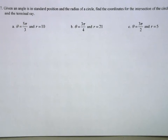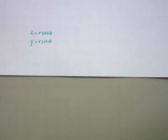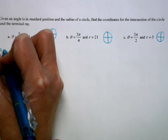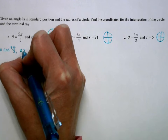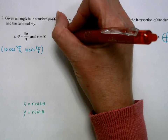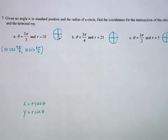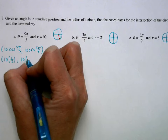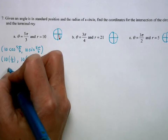Given an angle in standard position and the radius of the circle, find the coordinates of the intersection of the circle and the terminal ray. The x-coordinate is r·cos θ and y is r·sin θ. For θ = 5π/3 and r = 10: cos(5π/3) = 1/2 (short x, positive) and sin(5π/3) = −√3/2 (long y, negative), giving coordinates (5, −5√3).